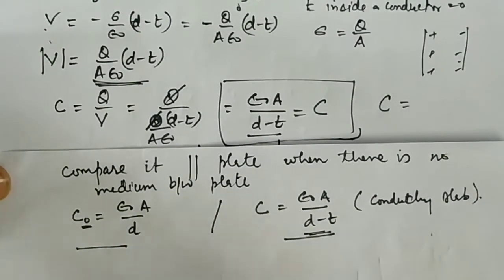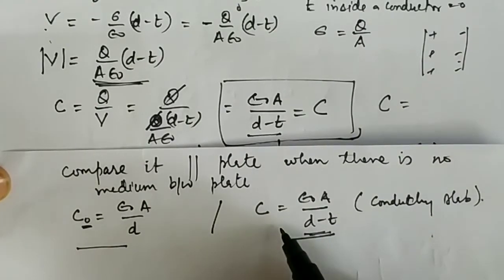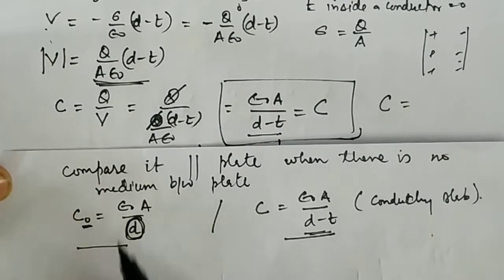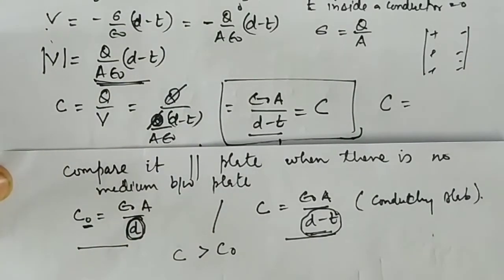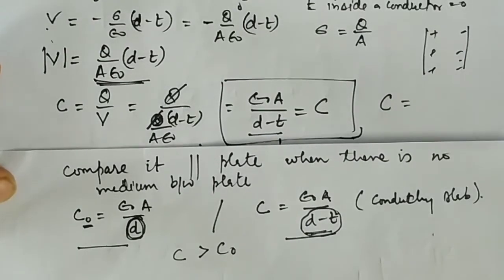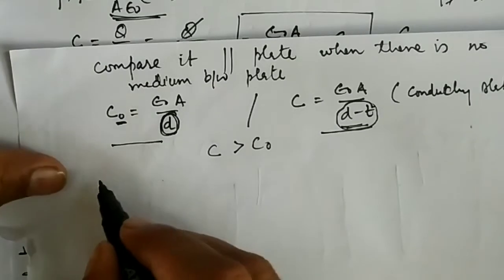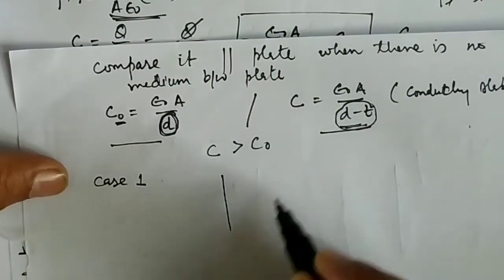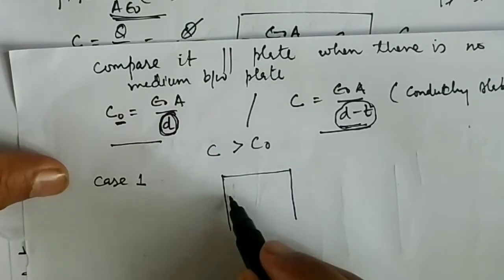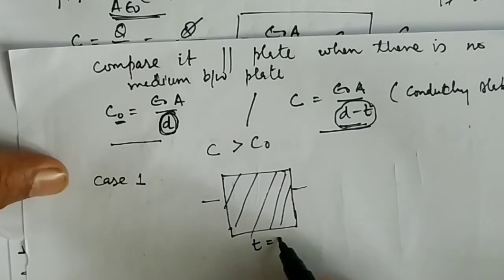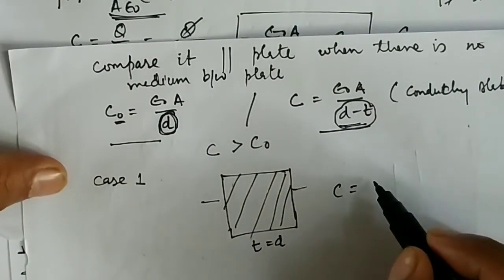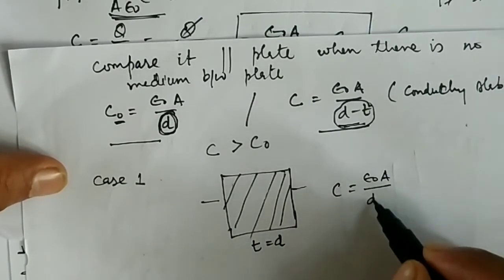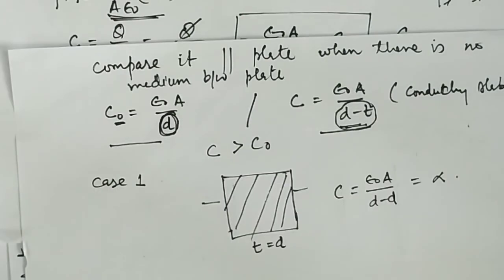Consider the special case where the conducting slab completely fills the gap between the parallel plates, so thickness t equals separation d. Then the formula gives C = ε₀A / (D - D) = ε₀A / 0, which equals infinity. When the gap between the plates is completely filled with a conducting medium, the capacitance becomes infinite.